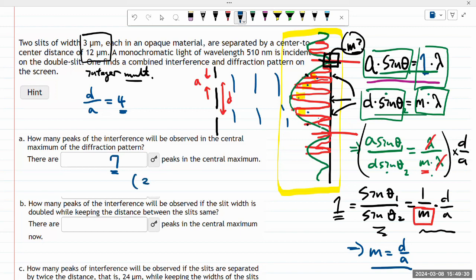Part B asks how many peaks will be observed if the slit width is doubled while keeping the distance between slits the same. So a is doubled while d is the same. That means your single slit diffraction pattern is narrower, so you'll fit fewer maxima. Looking at this, you're going to get half of that. The value of m now will be 2 instead of 4, so you have 0 and plus minus 1, then the missing maximum. So it'll be 3.